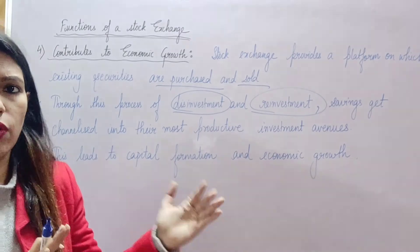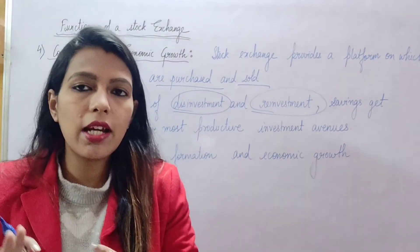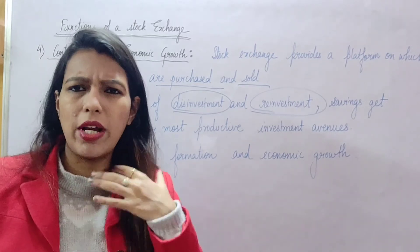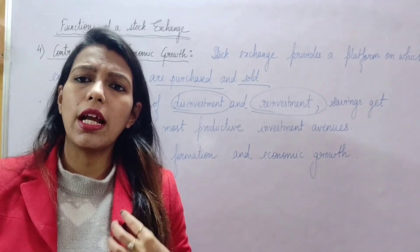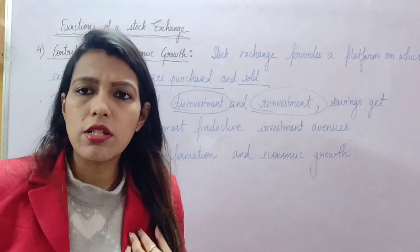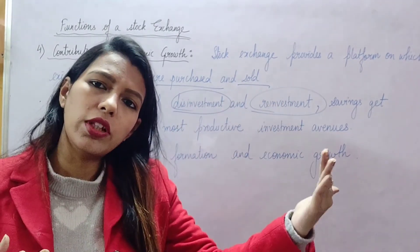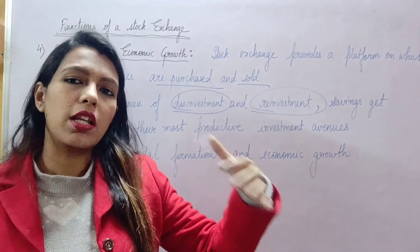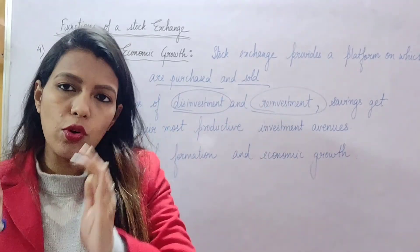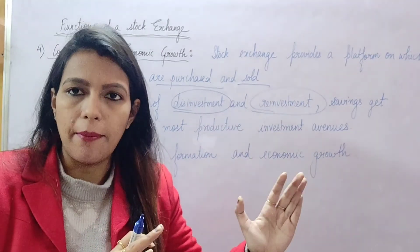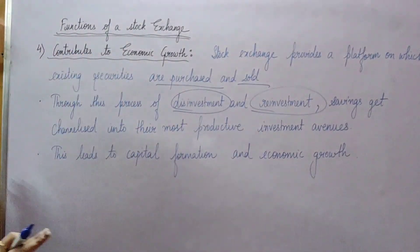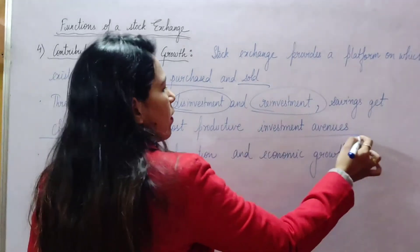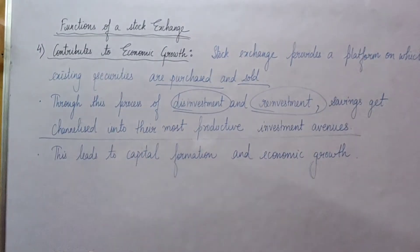Reliance will invest that money and earn profit, which leads to economic growth. This is how savings are channelized — I have idle money, extra money, and I put that money into Reliance shares. Reliance invests it, opens a new branch, so the money is put to its most productive use. The process of disinvestment and reinvestment puts savings into the most productive investment avenues, leading to capital formation and economic growth.